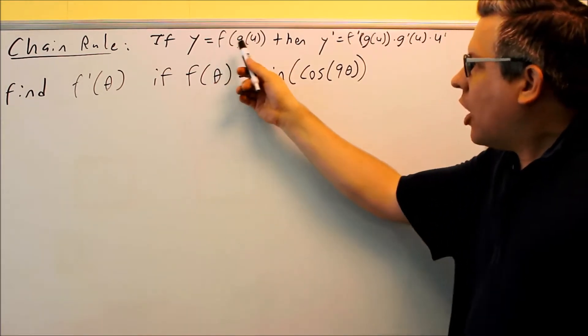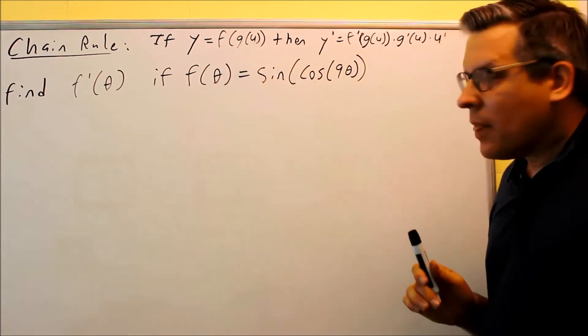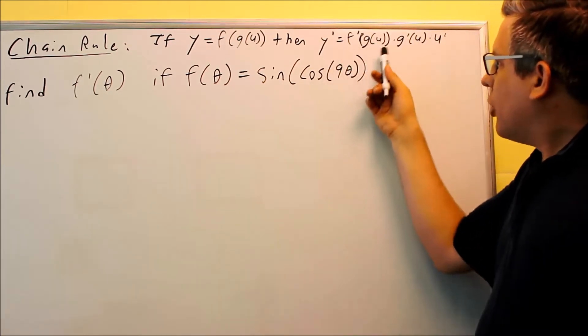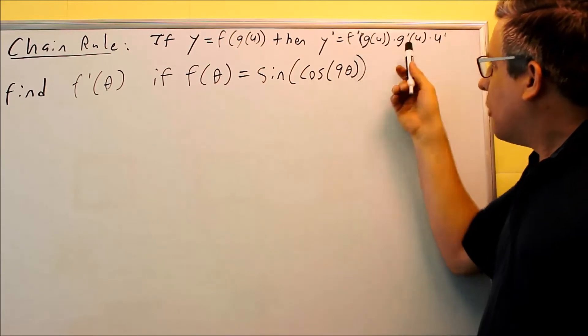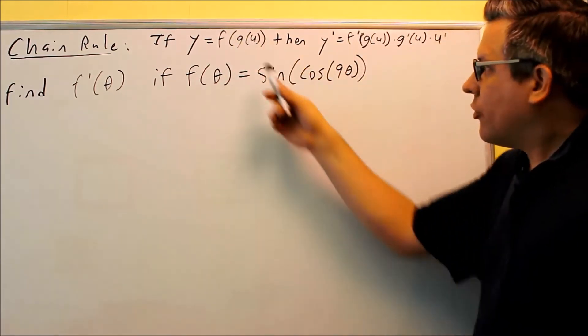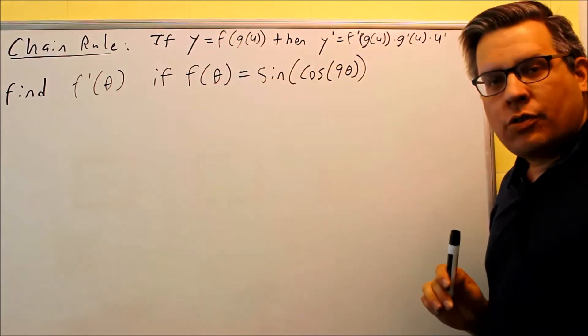I have an f of g of u. So this is the formula. You're going to do the derivative of the outside function, derivative of the f, then we'll do the derivative of the inside one, derivative of g, and then finally we'll do the derivative of u.